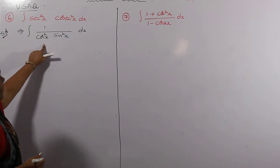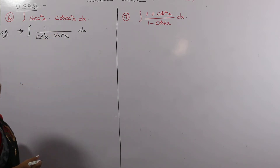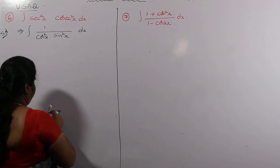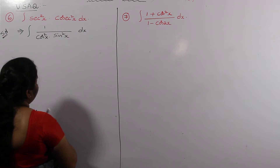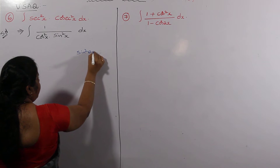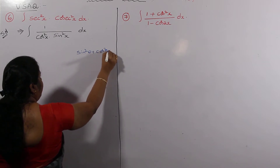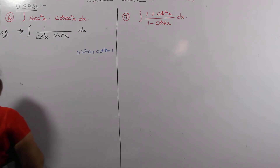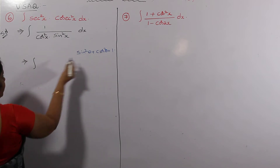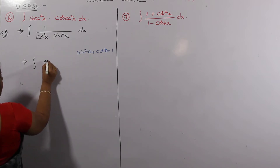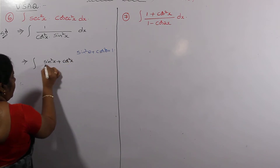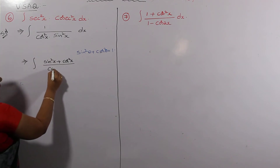So secant squared x is 1 over cos squared x and cosecant squared x is 1 over sin squared x. We use the trigonometric identity sin squared theta plus cos squared theta equals 1. Substituting this identity in place of 1, we write sin squared x plus cos squared x, all divided by cos squared x times sin squared x, dx.